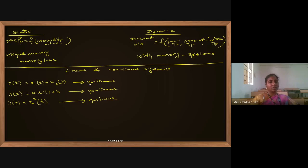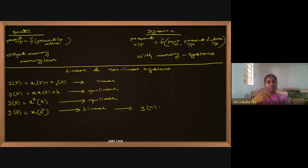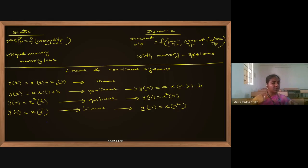The first case, y(x1, x2) = x1 + x2, is linear. Following the general rule: y(t) = x(t)² is a linear system. In discrete time, y(n) = x²(n) similarly. Also, t·x(t) is linear.